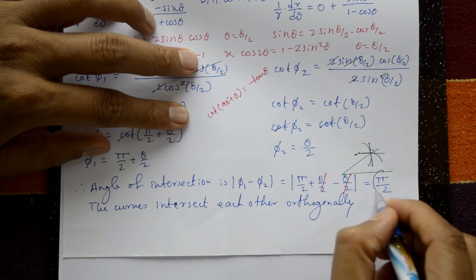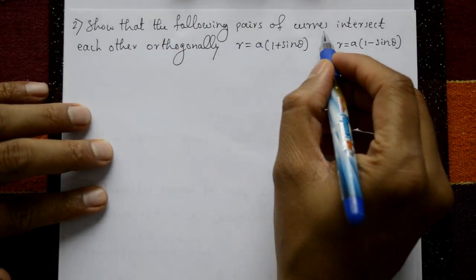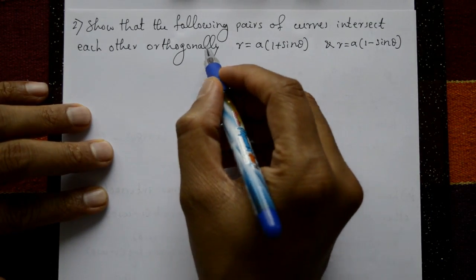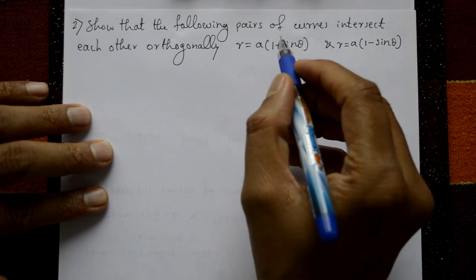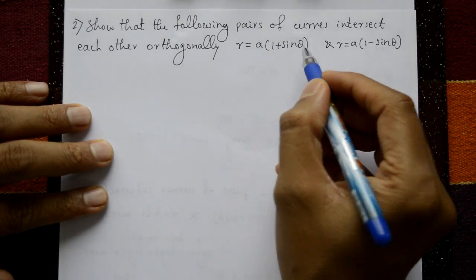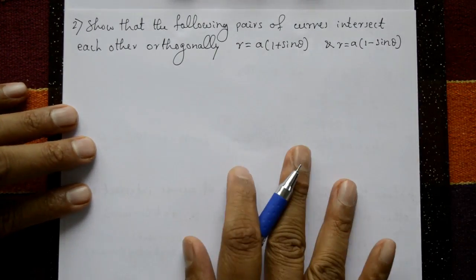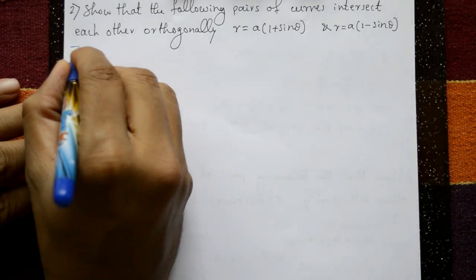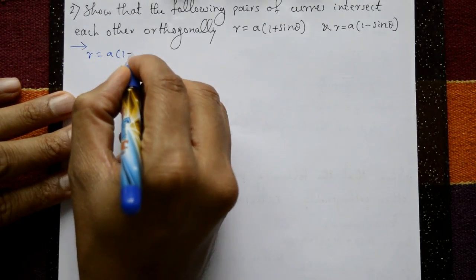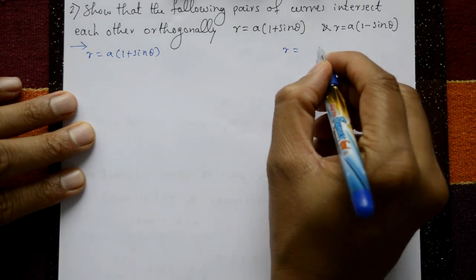The angle of intersection is 90 degrees, which means the curves intersect each other orthogonally. Orthogonally means 90 degrees — this is the answer for the first pair. Now for the second problem: prove that the curves r = a(1 + sinθ) and r = a(1 - sinθ) intersect each other orthogonally. Finally, φ = π/2.